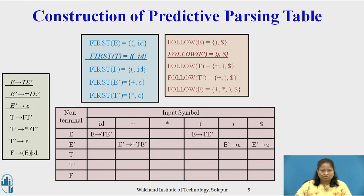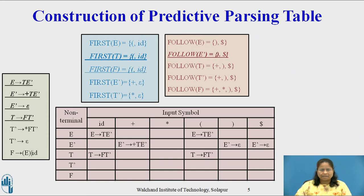Since Follow of capital E-dash equals {right parenthesis, dollar}. Since First of capital F T-dash equals First of capital F equals {left parenthesis, id}, to acquire the entry, the production capital T derives capital F T-dash causes M[capital T, left parenthesis] and M[capital T, id] to acquire the entry capital T derives capital F T-dash. Production capital T-dash derives star capital F T-dash causes M[capital T-dash, star] to acquire the entry capital F T-dash.